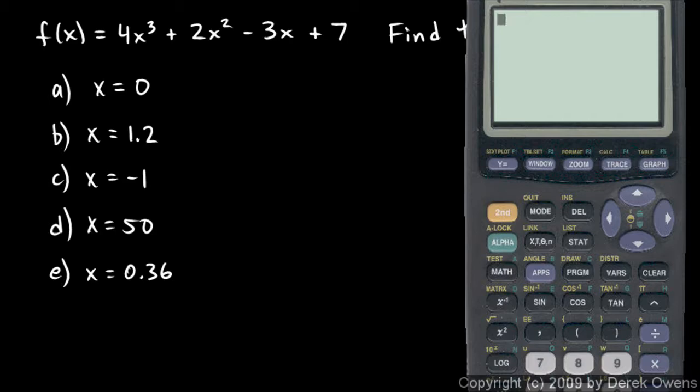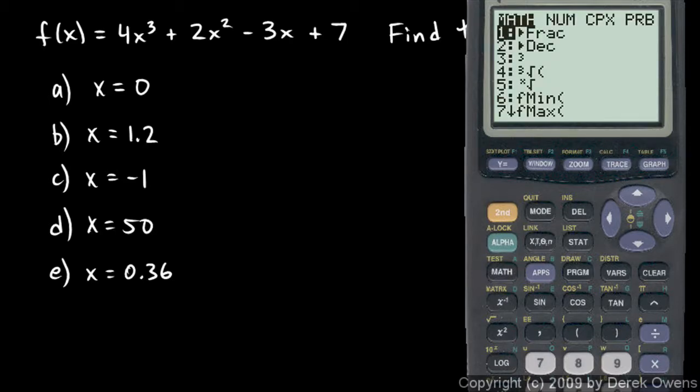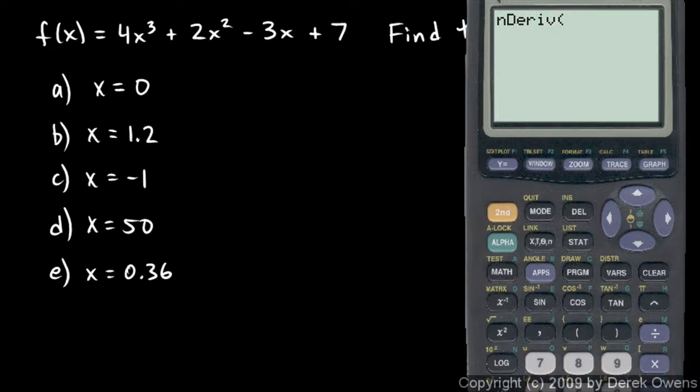And then when I do nDeriv, I hit the math key right here for nDeriv, math, and again it's option 8, and you can just press the 8 key instead of scrolling down there. You can just type math and then click 8, nDeriv, and now I'm going to type y1.